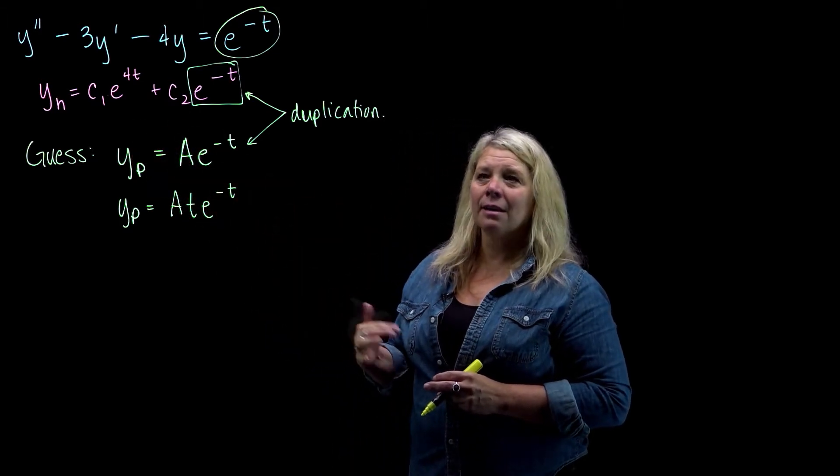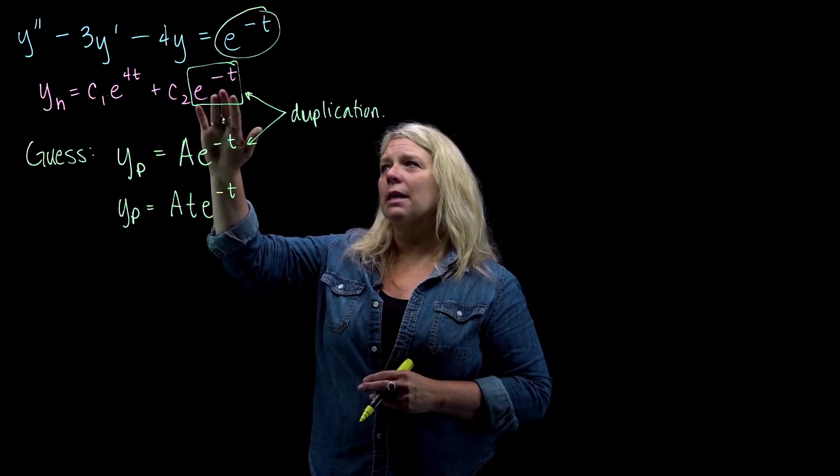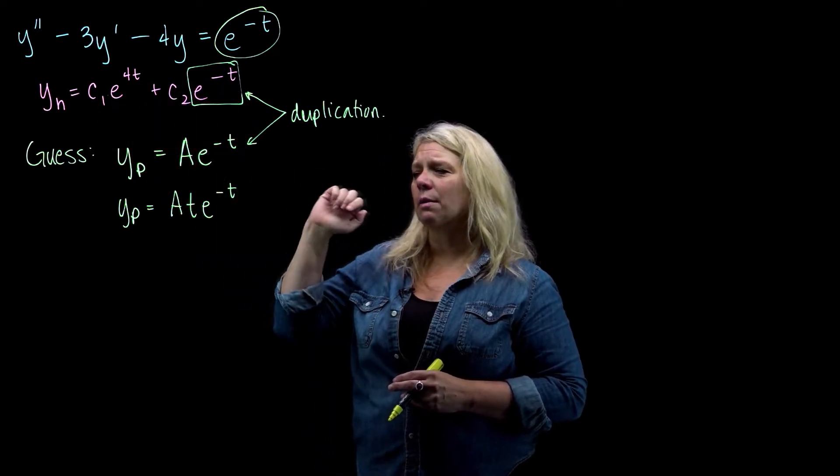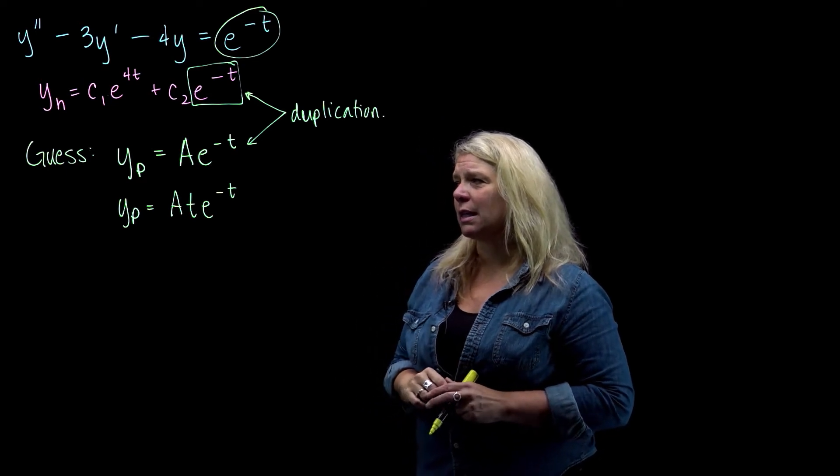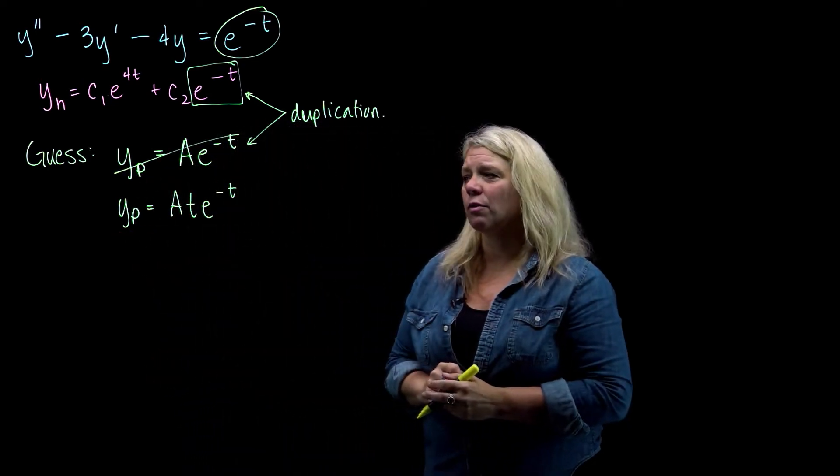Notice if you had a repeated zero for your characteristic polynomial, maybe you would have the same function occurring twice here or something and so you would need to multiply by a higher power of t. So this is not what I'm going to use for my guess. This is what I'm going to use for my guess.